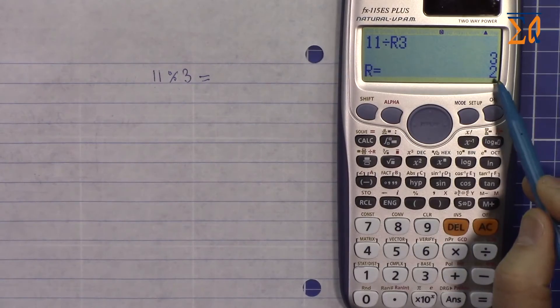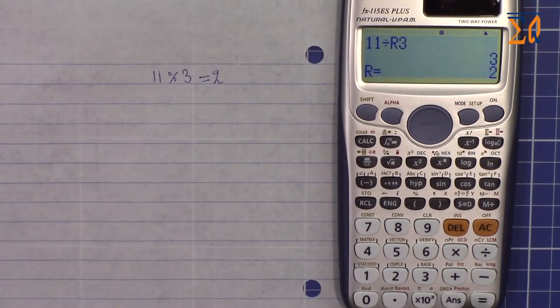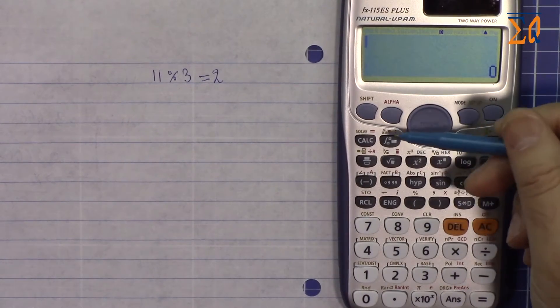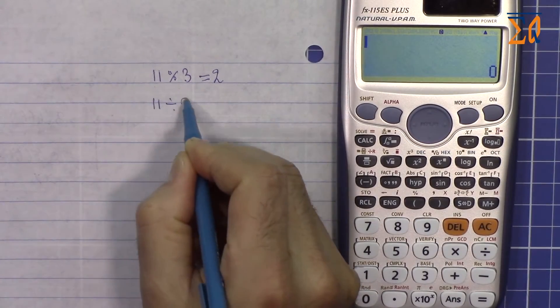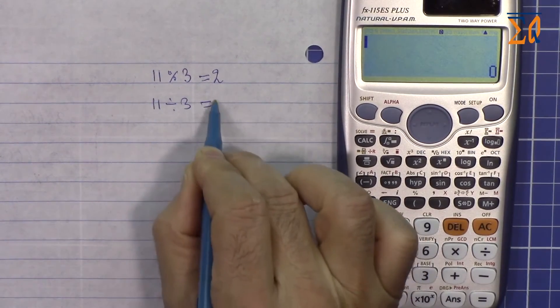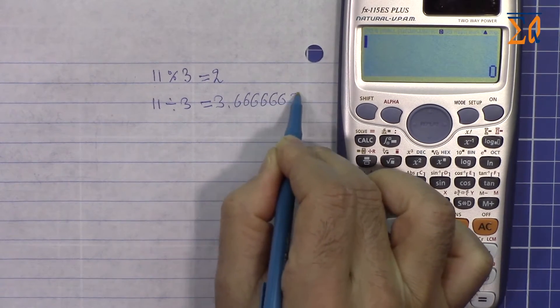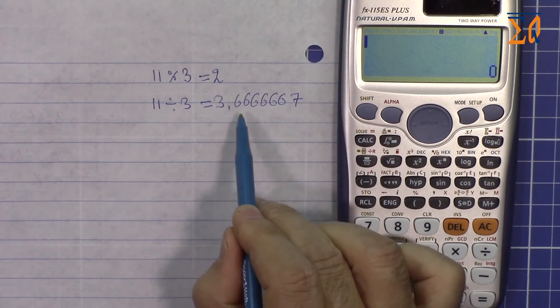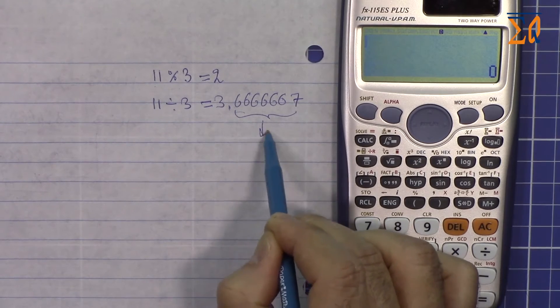Now how can we do this in a calculator that doesn't have this feature? Actually, 11 divided by 3 is something like this, and then we want to get the remainder which is 0.6666667.